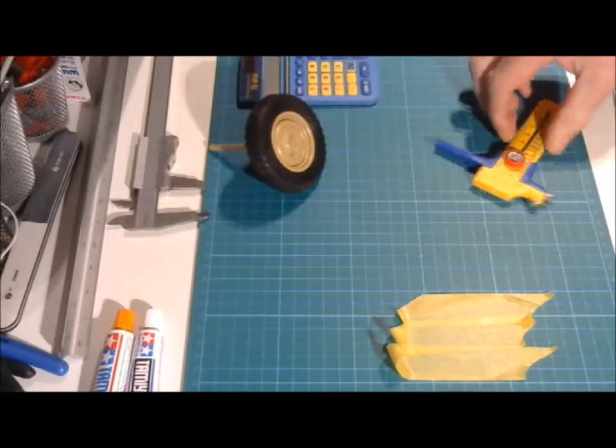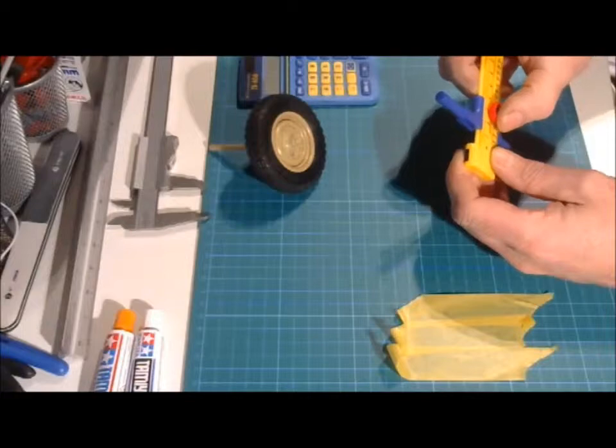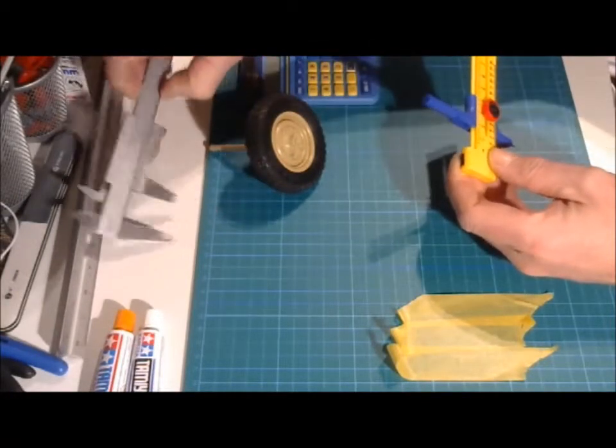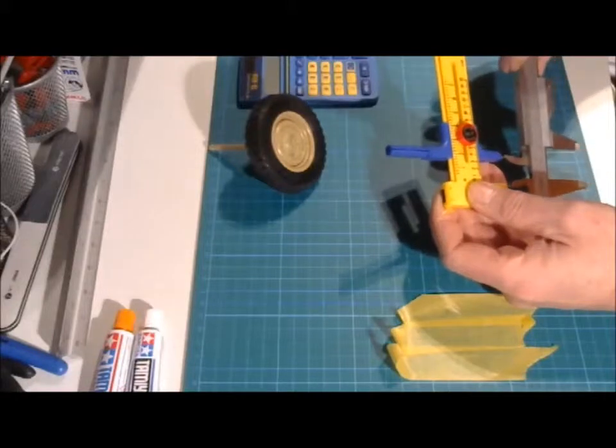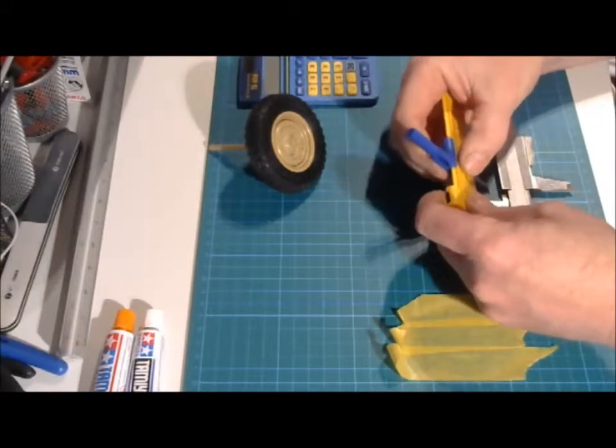Then we need 23mm here. That should be perfect. We are just making a control measurement. It's better to measure directly on the calipers of course.